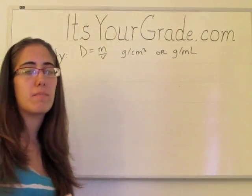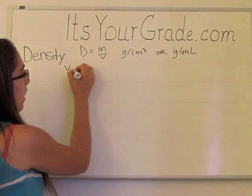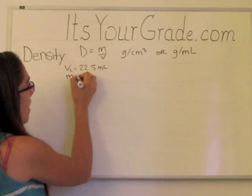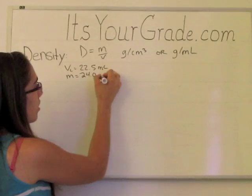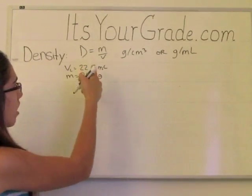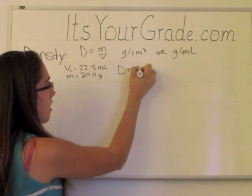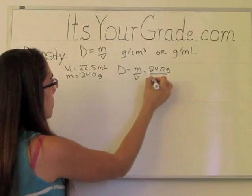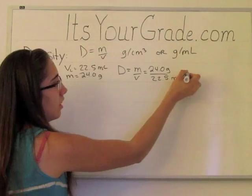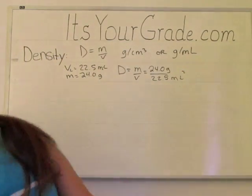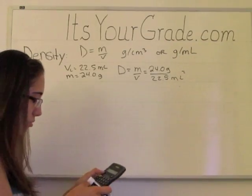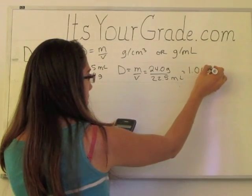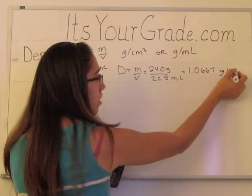Let's do a simple example of how to find density. The volume of a certain liquid is 22.5 milliliters and its mass is 24.0 grams. We will use our formula d equals m over v. Our mass is 24.0 grams and our volume is 22.5 milliliters.